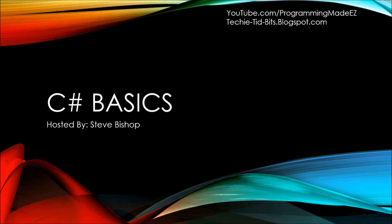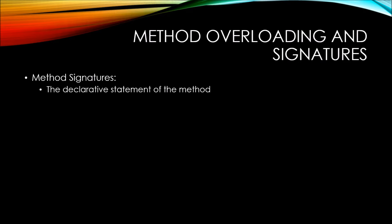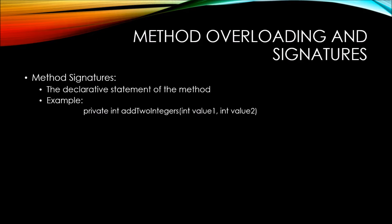In this video on C# basics, we'll be taking a look at method overloading and signatures. Method signatures are the declarative statement of the method. For example, 'private int AddTwoIntegers(int value1, int value2)' — this declaration with all of its different pieces, including the access modifier, return type, method name, and parameters, all make up the signature of the method.